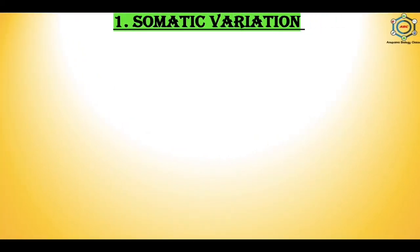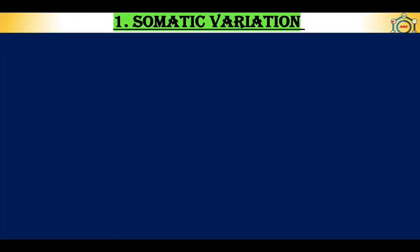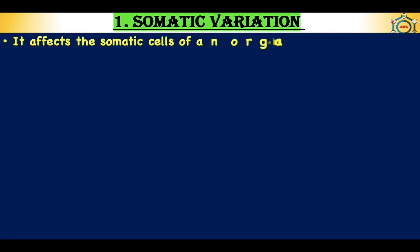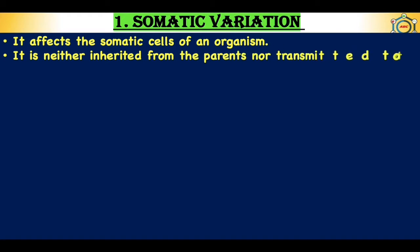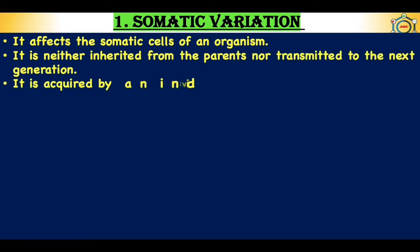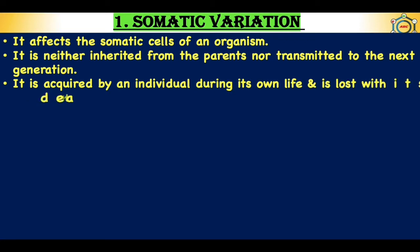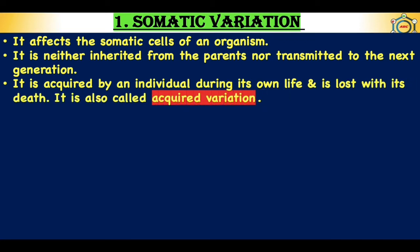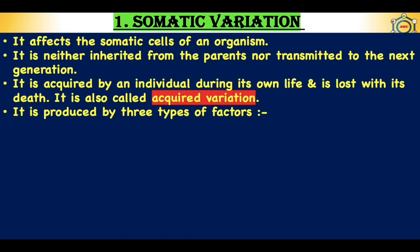Somatic variation affects the somatic cells of an organism. It is neither inherited from the parents nor transmitted to the next generation. It is acquired by an individual during its own life and is lost with its death, so it is also called acquired variation.